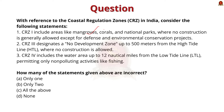Look at this question about Coastal Regulation Zone. Three statements are given and you have to find the incorrect one. The first statement says CRZ1 includes areas like mangroves, coral, and national parks where no construction is generally allowed except for defense and environmental conservation projects — this is correct. The second statement says CRZ3 designates a no development zone up to 500 meters from the high tide line — this is incorrect, as the no development zone is up to 200 meters from the high tide line. The third statement says CRZ4 includes water area up to 12 nautical miles from the low tide line permitting non-polluting activities like fishing — this is correct. So statement two alone is incorrect, and the answer is option A.